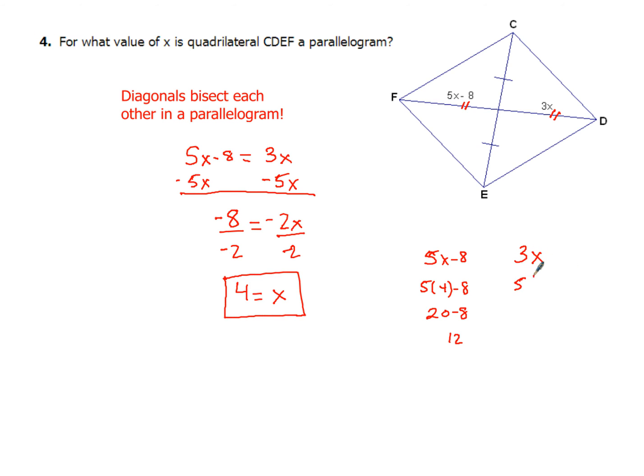We end up with 12. Both of these values are the same, so that's my check to make sure I got it correct. Don't just say, okay, I got a number for x, so I'm done and I'm moving on. Sometimes take that extra step and make sure what you've got is correct — it's going to help you pick up any careless mistakes.